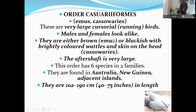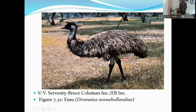The next order is Order Casuariiformes, which consists of the emus and cassowaries. These are very large, cursorial running birds. Males and females look alike. They are either brown, in the case of the emus, or blackish with bright-colored wattles and skin on the head, as for the cassowaries. The aftershaft is very large in cassowaries. This order has six species in two families. They are found in Australia, New Guinea, and adjacent islands. They are 120 to 190 centimeters in length. Here is a picture of the emu.